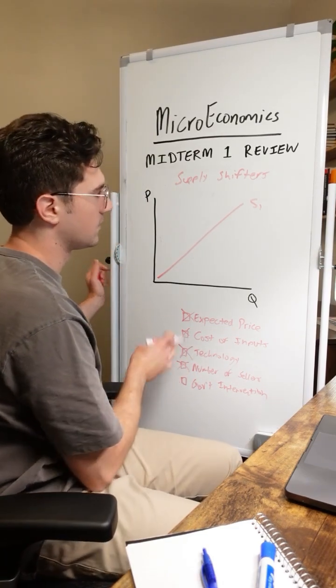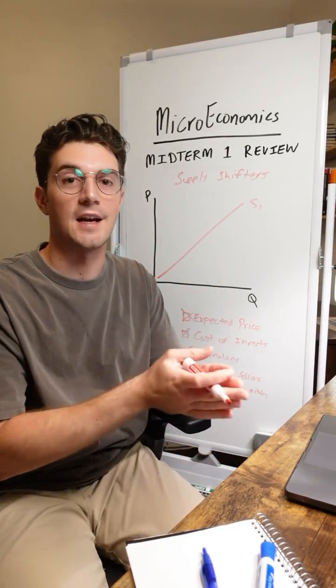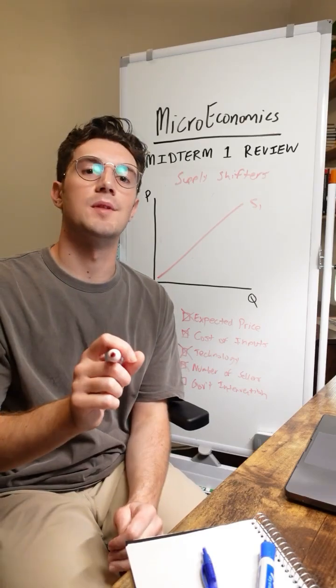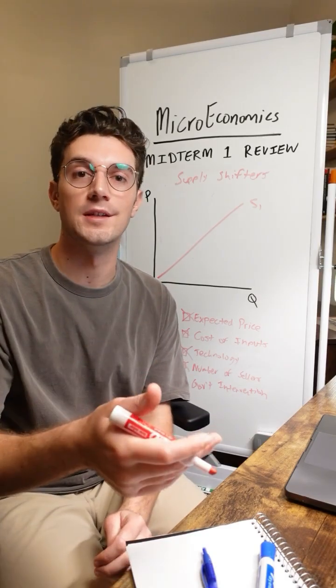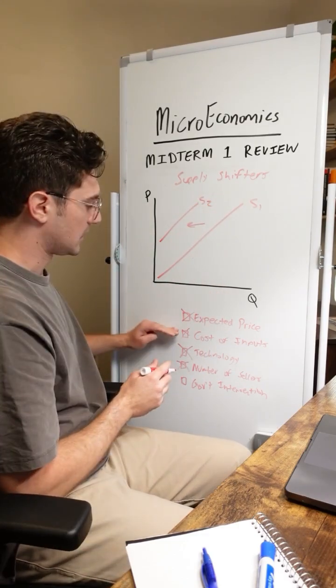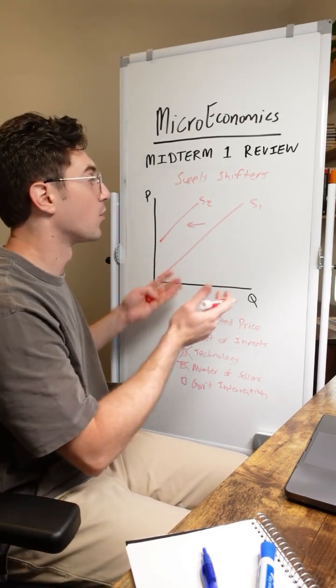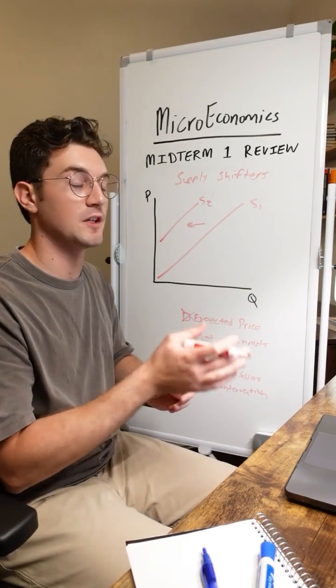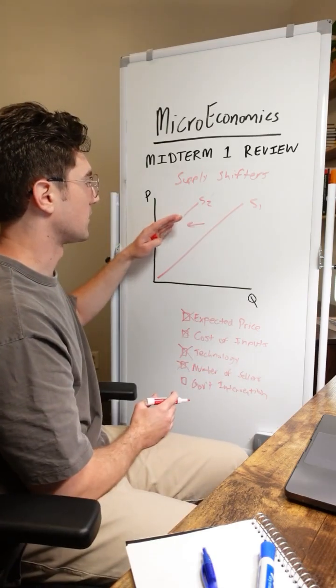All right, lastly here, government intervention. This is kind of a two-parter here with taxes versus subsidies. Let's start with taxes here. If the government increases their taxes on producers, that's going to decrease supply of the good. Similar to cost of inputs here. It's just now more expensive for producers to output as many units of the good. And in turn, they'll have to pull back their supply.